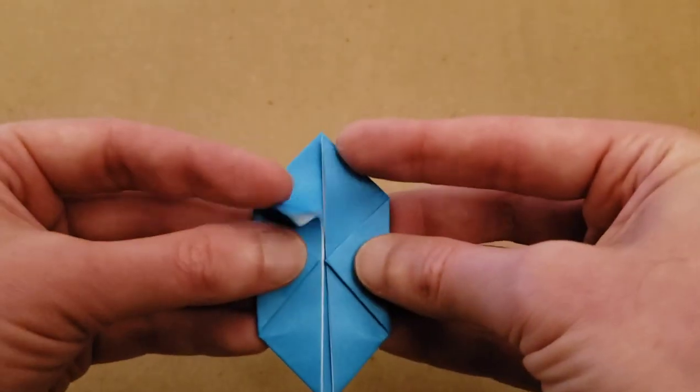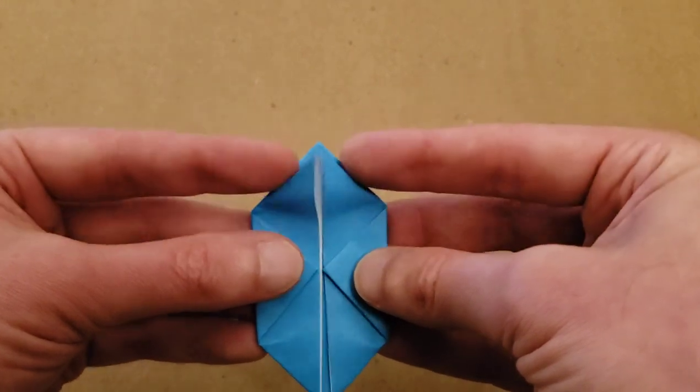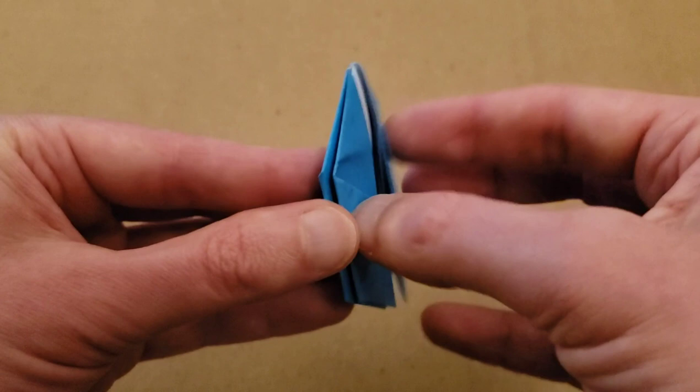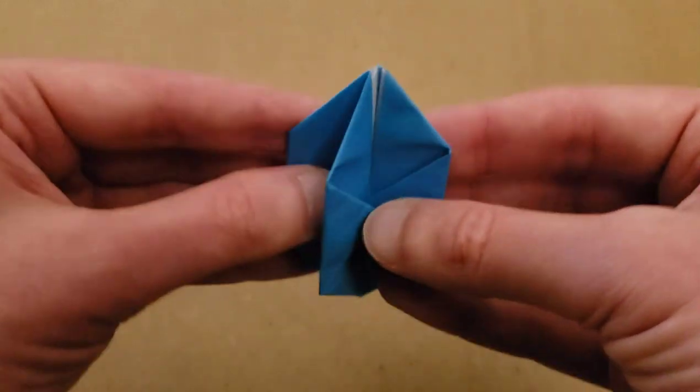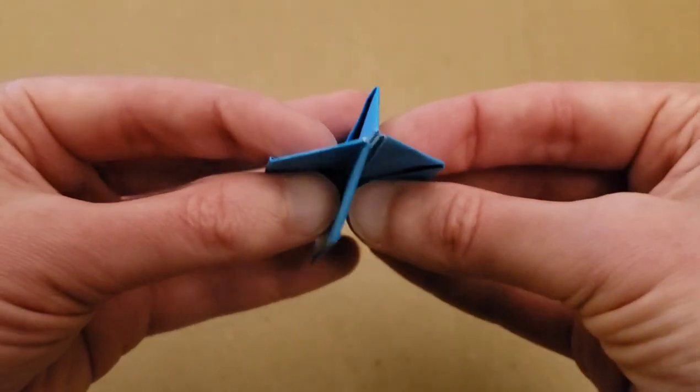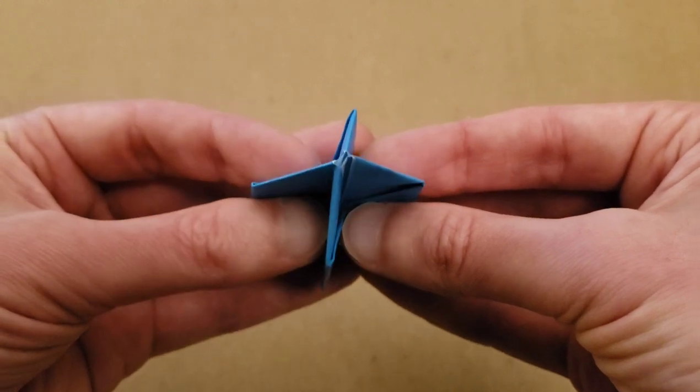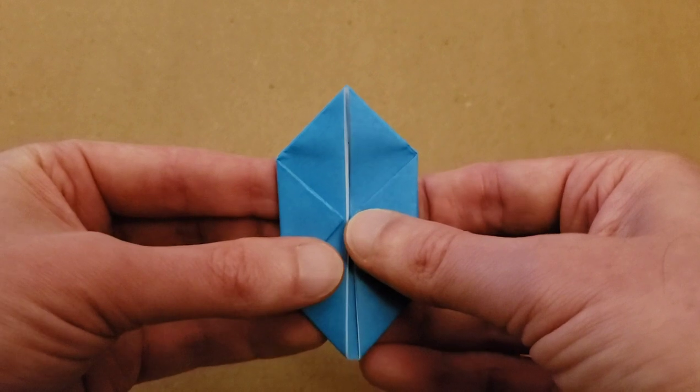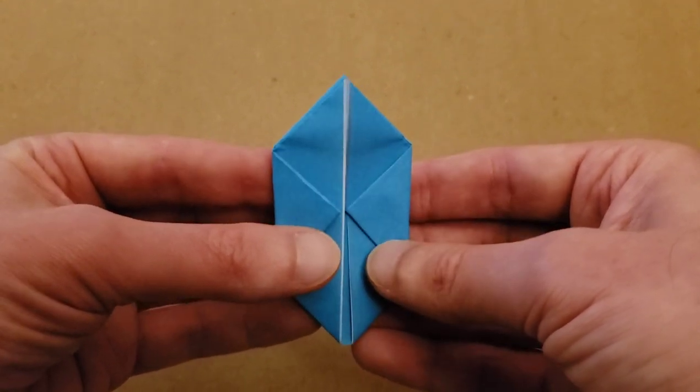So at this point, you should have your little flaps at the top. And at the bottom, there's actually a hole at the bottom. And that is exactly what we want. So we just have a few more steps and it'll be done.